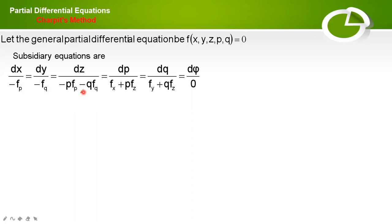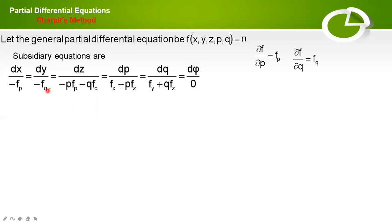Now, in this subsidiary equation: fp means the partial derivative of f with respect to p, that is ∂f/∂p. Similarly, fq is the partial derivative of f with respect to q. fz means partial derivative of f with respect to z. fx means partial derivative of f with respect to x, and fy means partial derivative of f with respect to y.